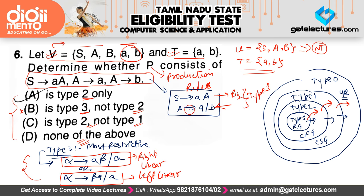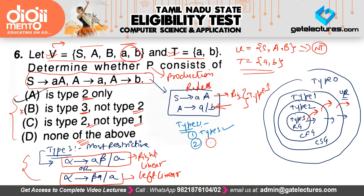The options are: it is Type 2 only; it is Type 3 but not Type 2; it is Type 2 but not Type 1; and none of the above. For a grammar to be Type 2, all productions must satisfy Type 3 conditions, and productions of the form alpha derives beta must have a left-hand side of exactly one variable, while the right-hand side can be any combination of variables or terminals.